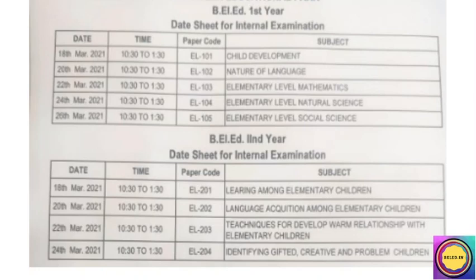Next we will talk about the second year, which has 4 subjects. There is a compulsory section with no options - all 4 subjects are compulsory. The first is Learning Among Elementary Children, Language Acquisition, Warm Relationship with Elementary Children, and Identifying Gifted, Creative and Problematic Children.